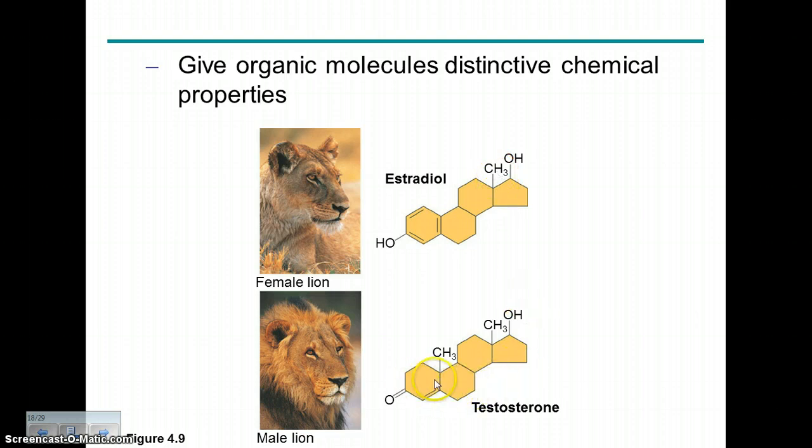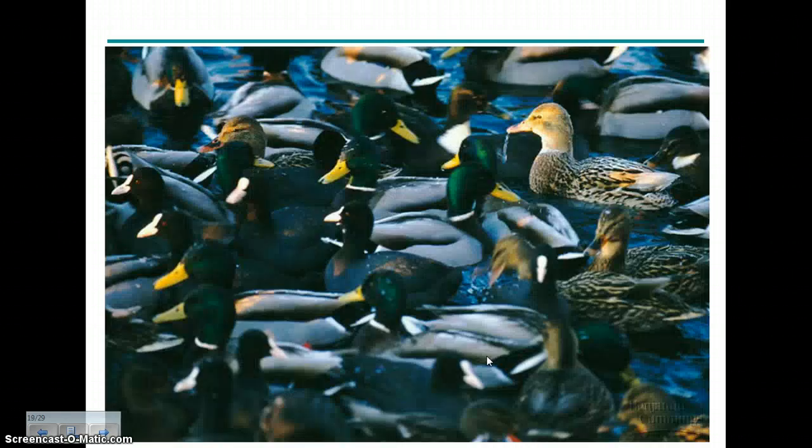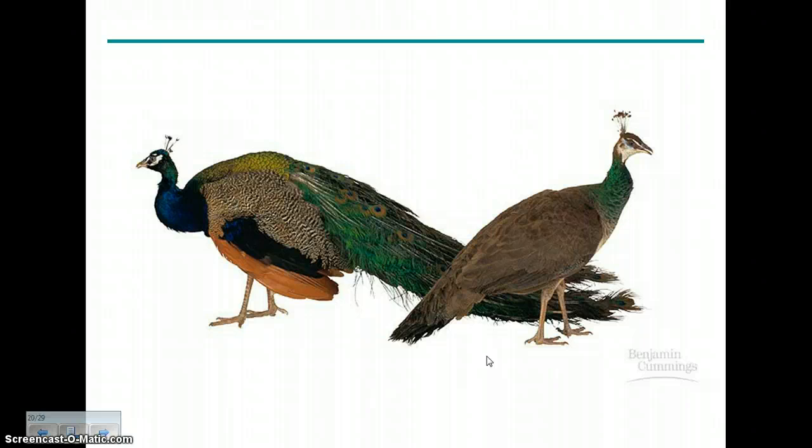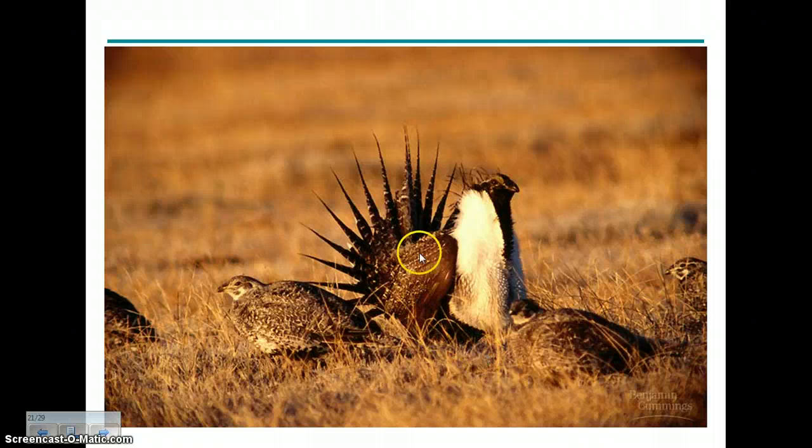And even though these molecules look very similar, because of the different arrangement of these functional groups, they are quite different. One being a type of estrogen, and one being testosterone that helps make males males and females females. That's in the case with these male and female mallards, the peacock and the peahen, and these prairie chickens, the male with his elaborate feathers here.